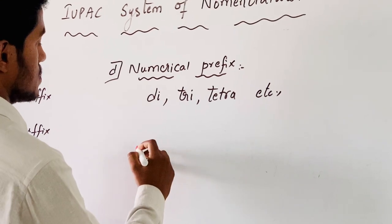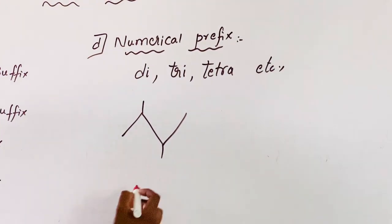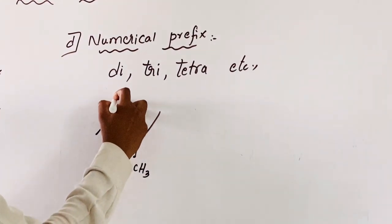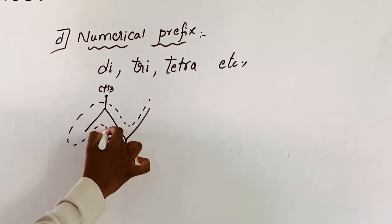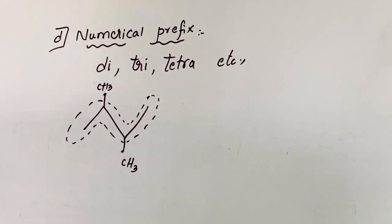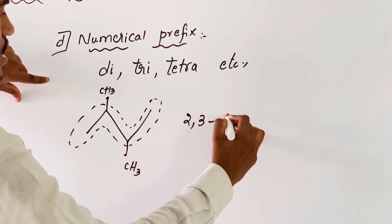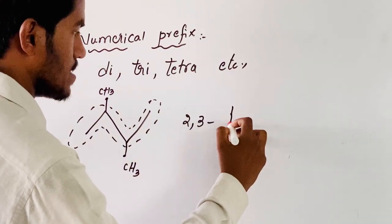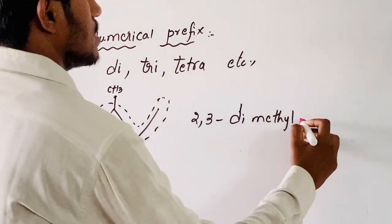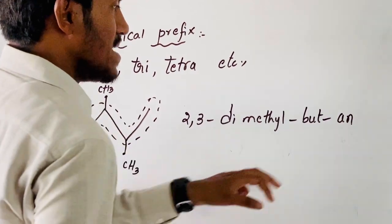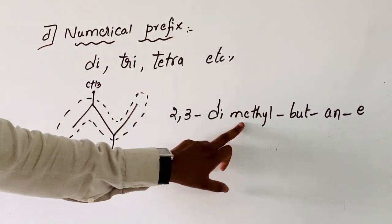While taking a simple example, the line formula of the given organic compound. The main chain is the four-membered chain. While giving the numbering: one, two, three. The methyl group is at positions two and three, repeating two times. That's why we use 'di'. So it becomes 2,3-dimethyl. The root word is 'but', no functional group, primary suffix is saturation 'ane'. So the name is 2,3-dimethylbutane.